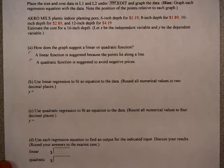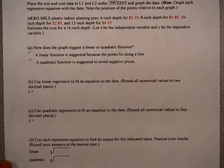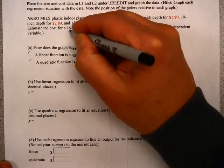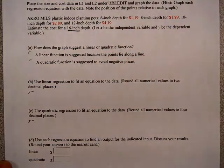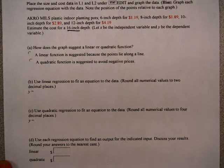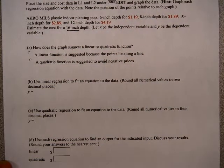Note the position of the points relative to each graph. Arco mills plastic indoor planting pots: 6-inch depth costs $1.19, 8-inch depth costs $1.89, 10-inch depth costs $2.89, and 12-inch depth costs $4.19. Estimate the cost of a 16-inch depth. X is the independent variable, and Y is the dependent variable.